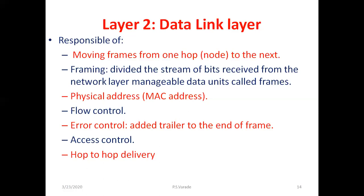Physical address — MAC address — stands for Medium Access Control. The physical address tells which machine the data is going to and which machine is sending it. The data link layer generates that address and puts it in. For example, 168.162.3.253 is a nomenclature of IP, and that type of address is the physical address managed by the data link layer.